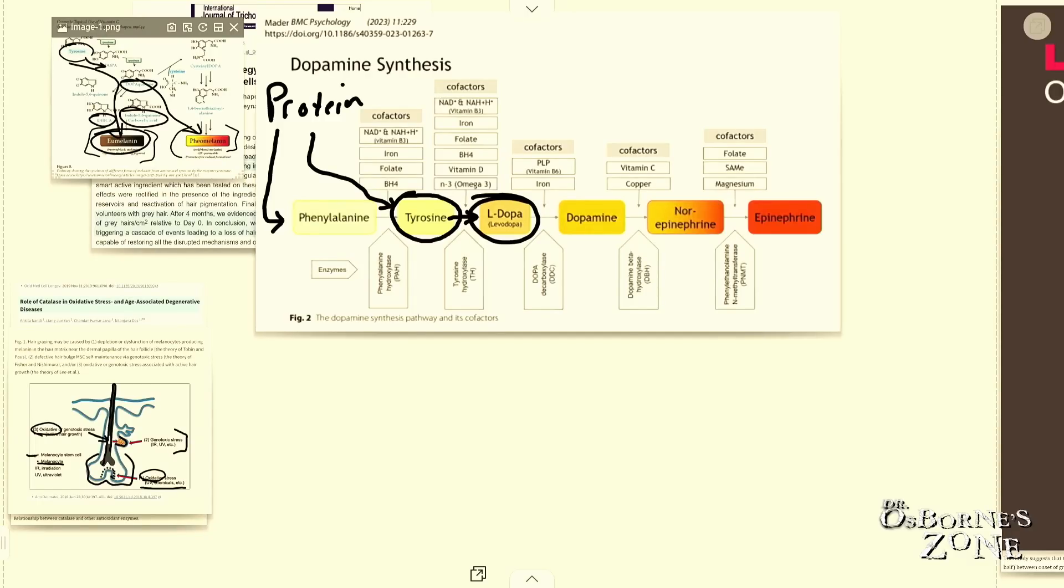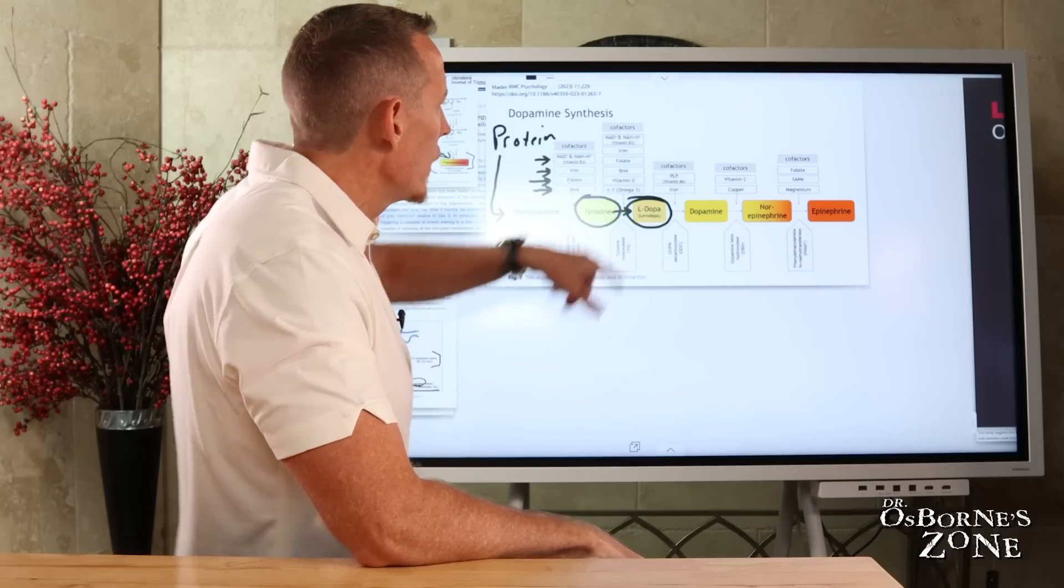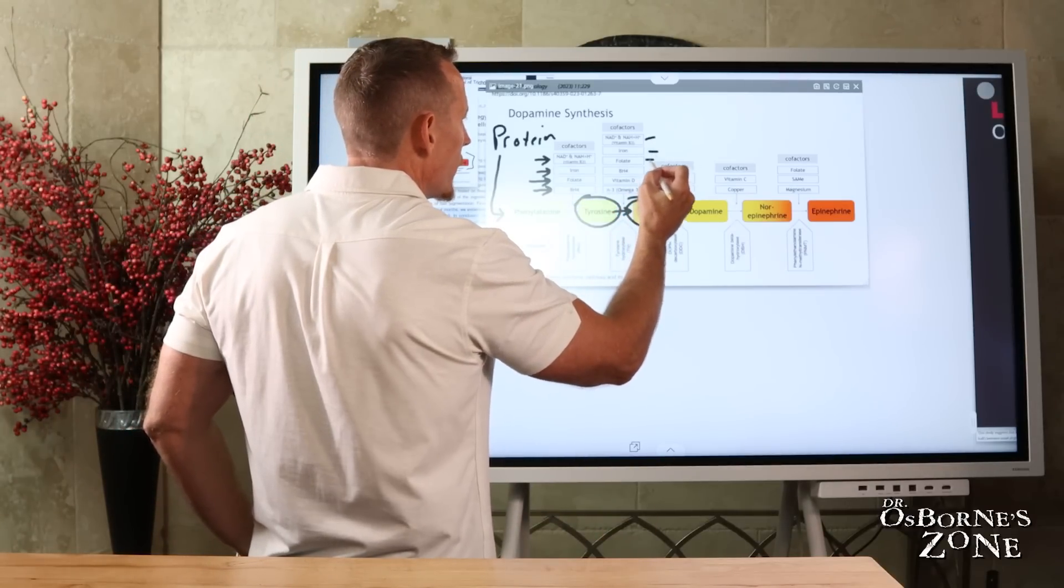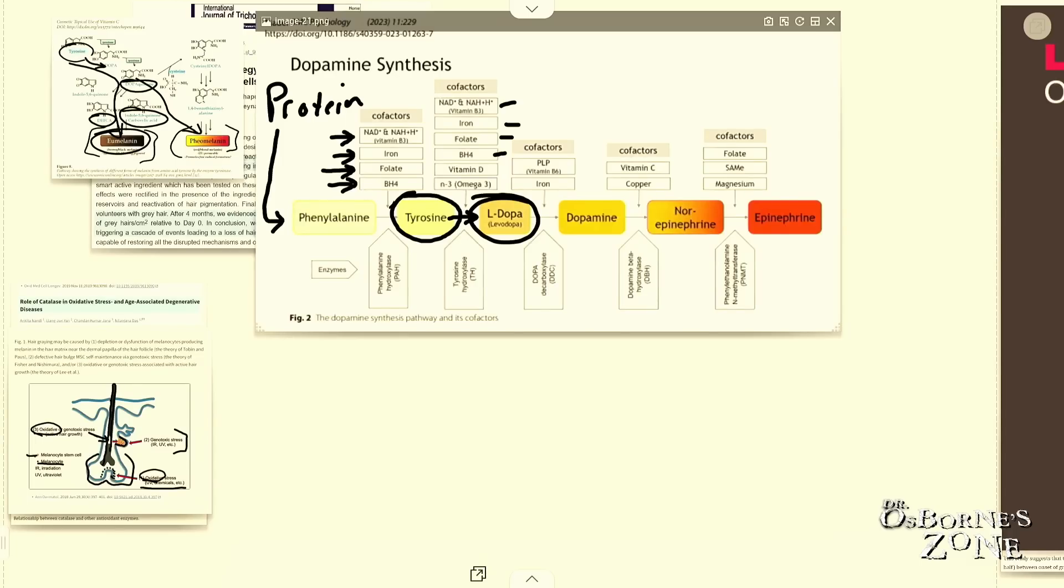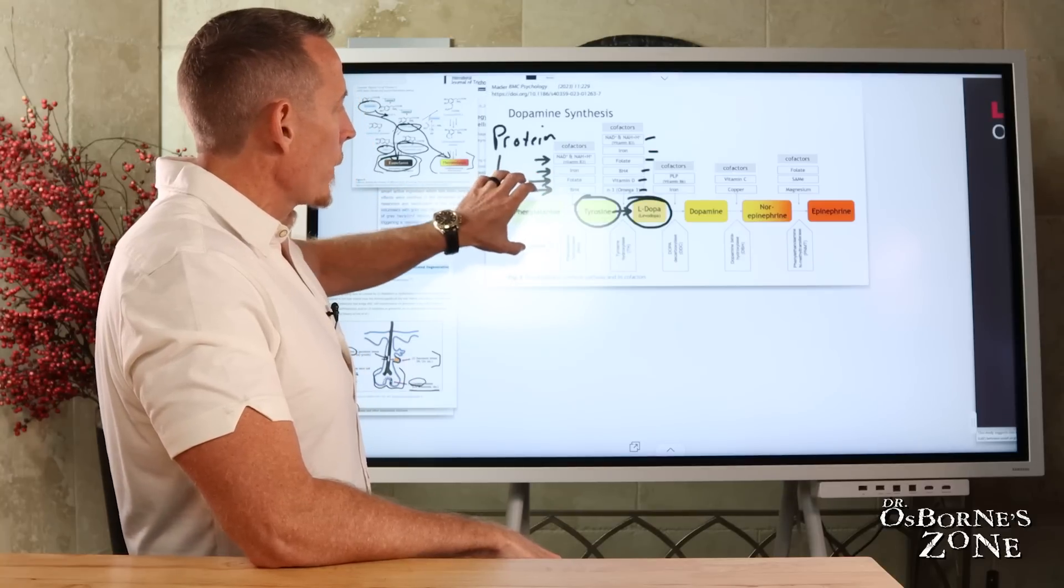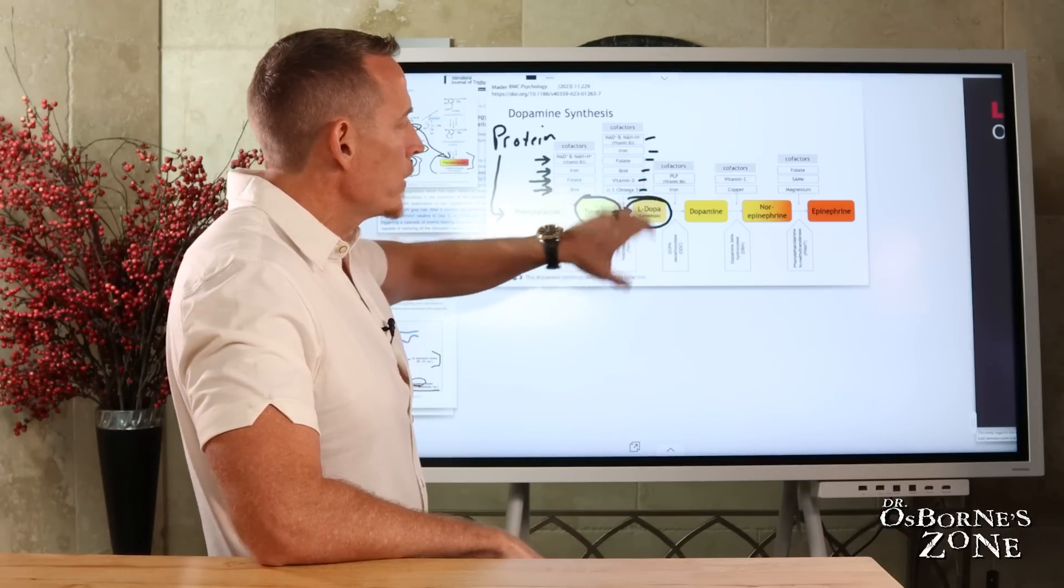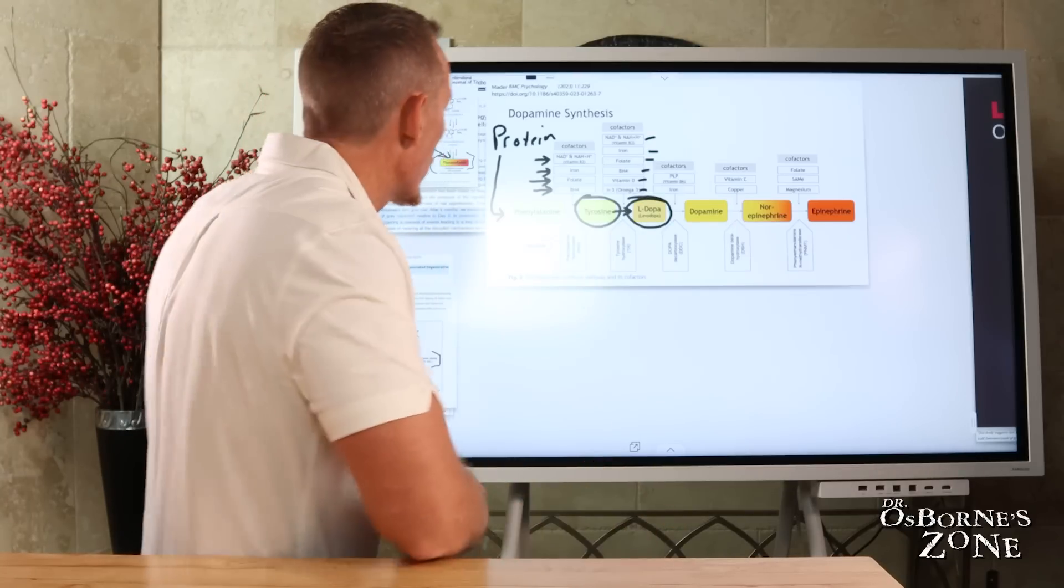For us to get phenylalanine and turn it into tyrosine, one, we have to make sure we eat enough protein. But what I want to show you here is that in order to convert that phenylalanine into tyrosine, that requires vitamin B3, which is NAD, also known as vitamin B3. It requires iron. It requires folate, which is vitamin B9 and BH4, which is a branch off of folate or subtype of folate. To get from tyrosine to L-dopa also requires vitamin B3, iron, folate, BH4, so same things, plus vitamin D, as well as omega-3. So these nutrients are all super important for your body to be able to convert the amino acids into dopa, which then goes on to produce the pigments of our hair.